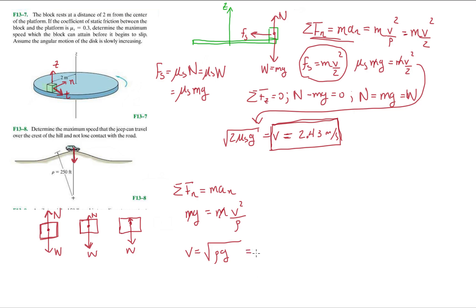You'll just be left with V equals the square root of rho g. And what's rho g? We're gonna have the square root of 250 feet times gravity, which is 32.2. And then at the end, we should get a velocity of 89.72 feet per second.